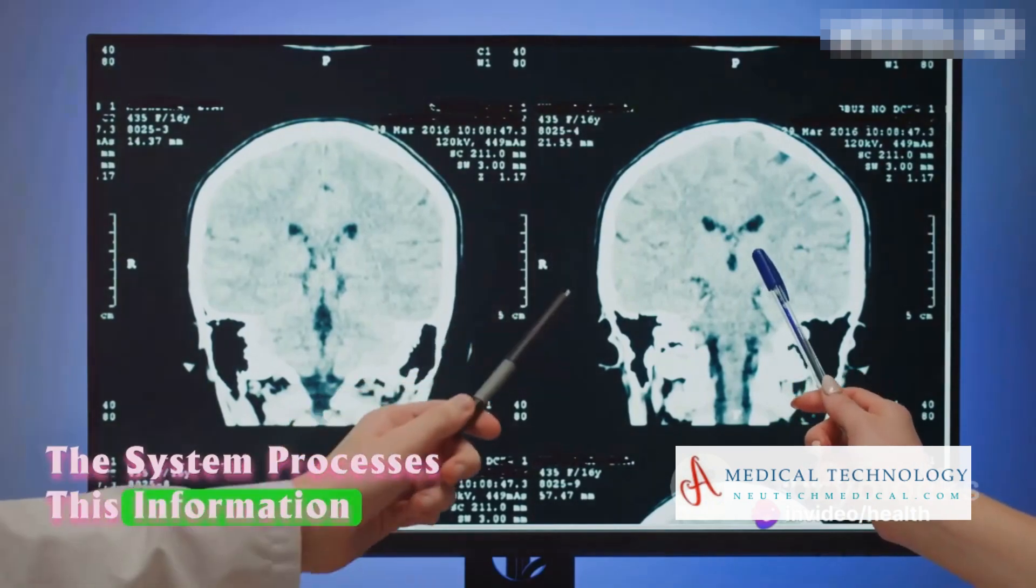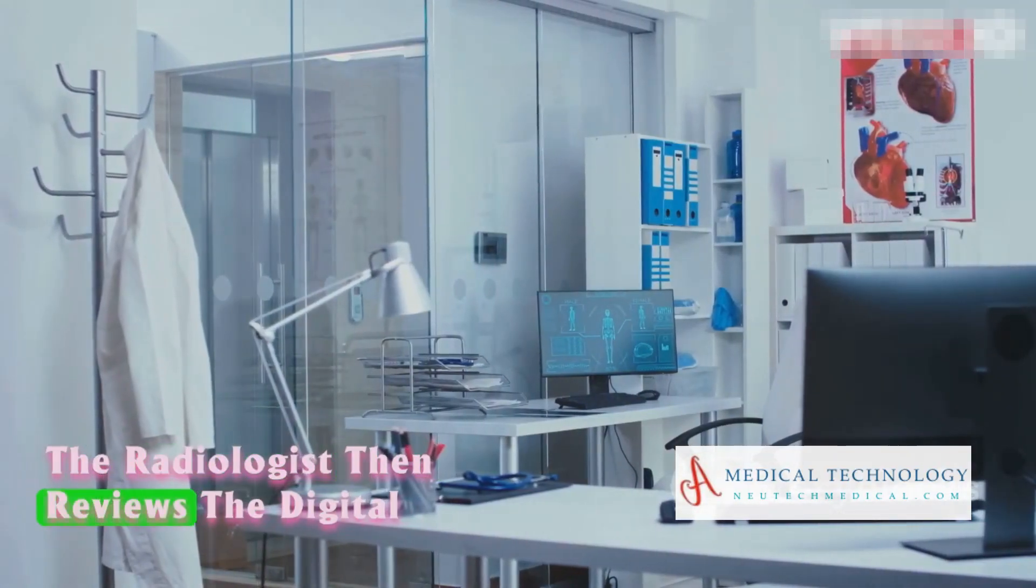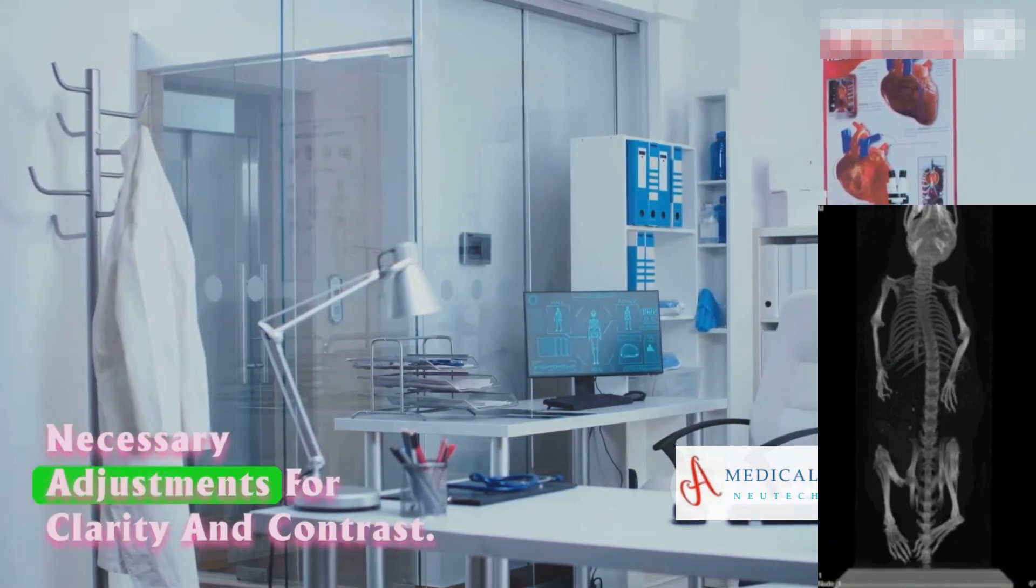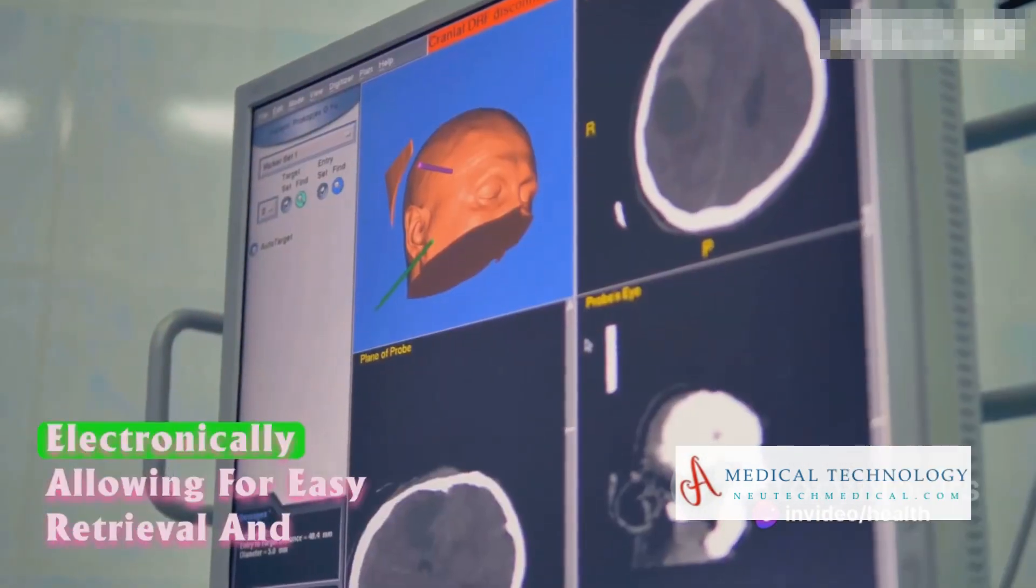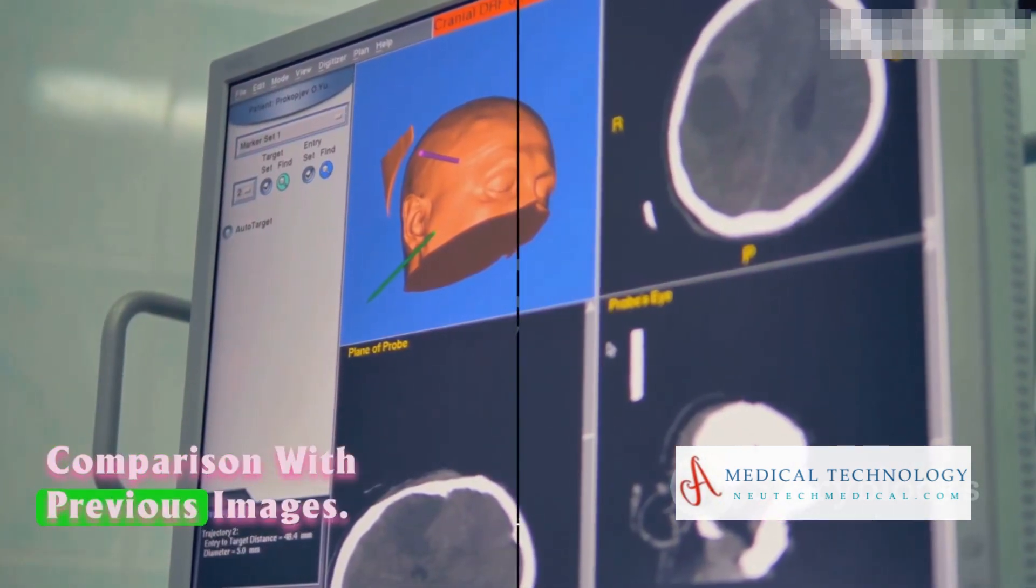The system processes this information to create a digital image. The radiologist then reviews the digital image on a computer monitor, making necessary adjustments for clarity and contrast. Lastly, the digital image is stored electronically, allowing for easy retrieval and comparison with previous images.